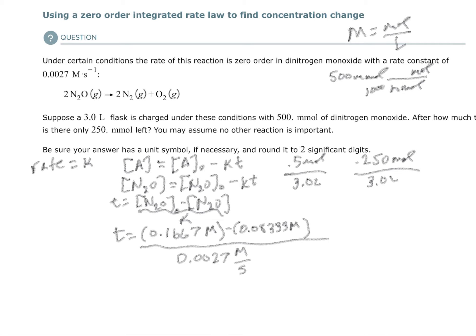So calculator: 0.1667 minus 0.08333 equals divided by 0.0027 equals, and I'm going to end up with 30.87777. Now they're asking for two significant digits. Well, the three and the zero are significant—the zero rounds up to one—so your answer is going to be 31.